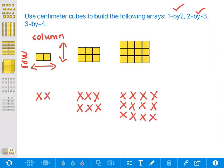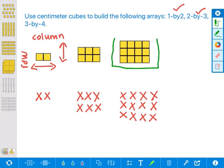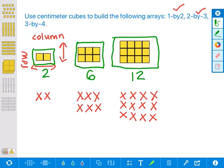So what do you guys notice about the patterns that you see in the three different arrays using the centimeter cubes? You might notice they are all rectangular in shape. They all have longer sides and shorter sides, so they all form rectangles. All of the arrays have an even number of cubes. The first one has two cubes, this has six cubes, and this has 12 cubes. So all even numbers: 2, 6, and 12 are all even numbers.